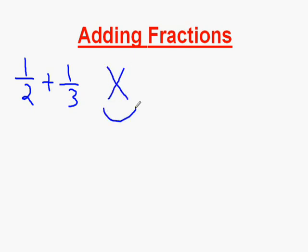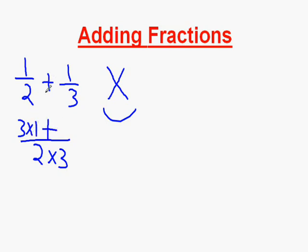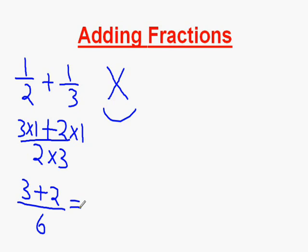Cross multiplying means you multiply the two denominators together and the denominator of one fraction with the numerator of the other. So it's 3 times 1 plus 2 times 1, which is the same as 3 plus 2 over 6, and we work this out as 5 over 6.